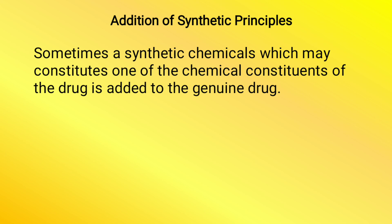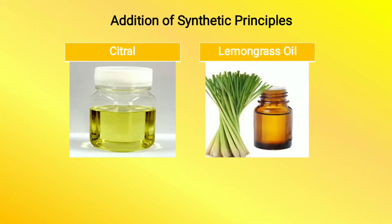Moving to the last one — addition of synthetic principles. Sometimes a synthetic chemical, which may constitute one of the chemical constituents of the drug, is added to the genuine drug. Kai baar synthetic chemicals genuine drug mein add ki jati hain in order to increase its bulk and cost. For example, citral can be added to lemongrass oil. Citral is comparatively quite cheap as compared to lemongrass oil, so if half the quantity of lemongrass oil is taken and the volume is made up by citral, it cannot be easily identified and the seller earns greater profit. This is known as addition of synthetic principles.